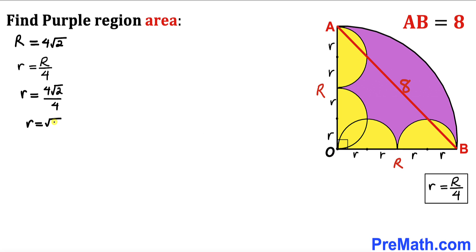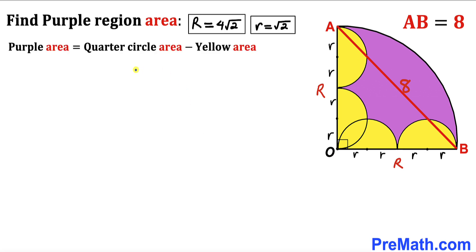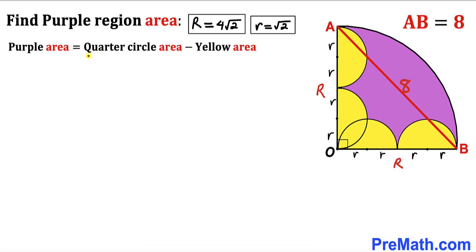Now let's make an observation. The purple shaded region area equals the quarter circle area minus the area of the yellow semicircles. So our task is to calculate the quarter circle area and the yellow area before we can find the purple region area.